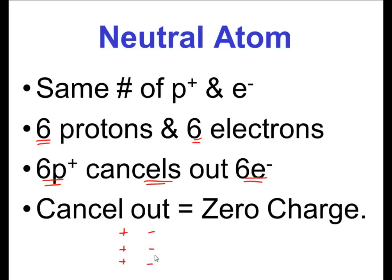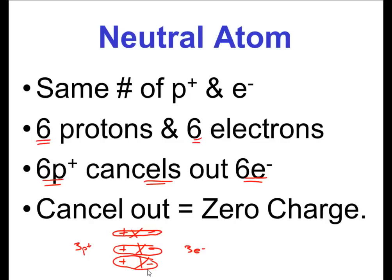Three electrons that are negative charges — three protons and three negative electrons cancel each other out. There's no charge between them. Each proton and electron pair cancels out. So what I'm trying to drive home: they're going to cancel each other out when it's neutral. You have to have the same number of protons and electrons.